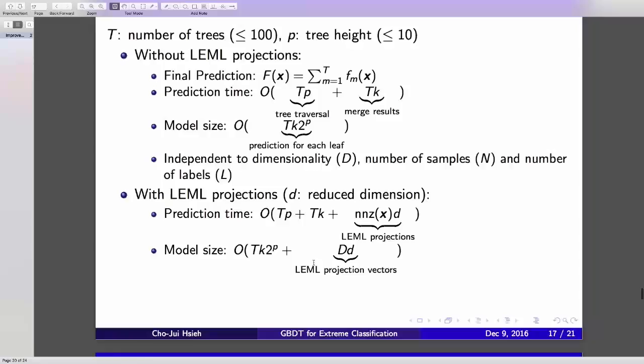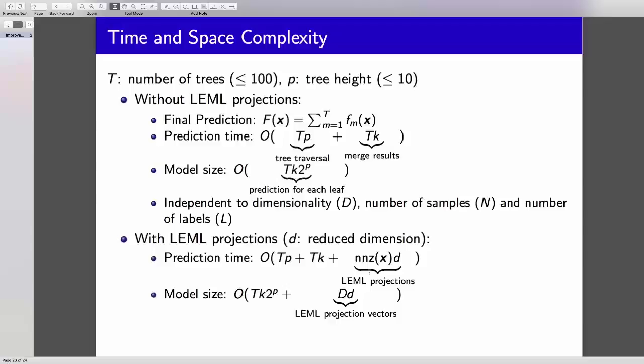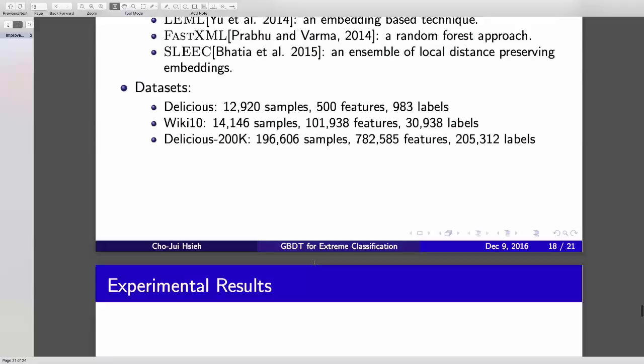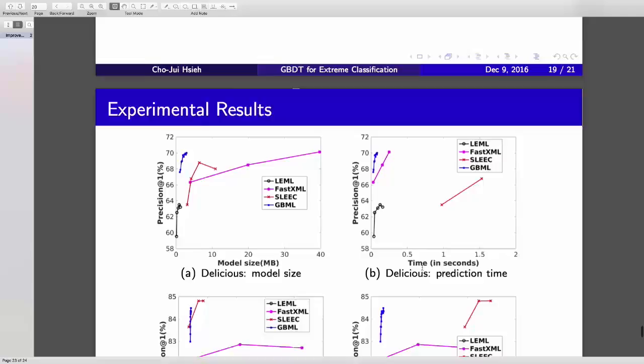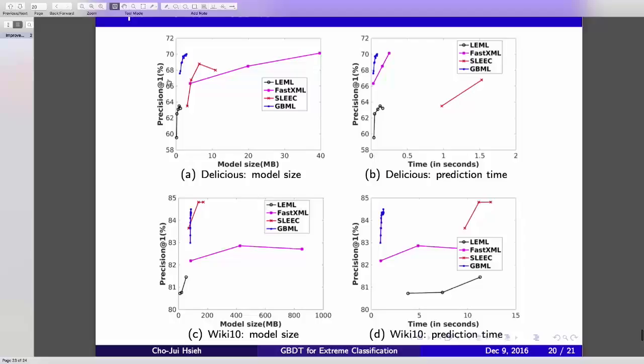Let's go to the experiment. We tried multi-level datasets. FastXML is a random forest approach, so we should compare with LENL. You can see our algorithm, GBML, gives similar prediction accuracy at top one, and we have much smaller model size and much smaller prediction time. And this is comparing with other algorithms. This is the model size versus prediction at one. We can see the blue lines, our algorithm, we can get better accuracy using smaller model size, and we can get better accuracy using less prediction time.